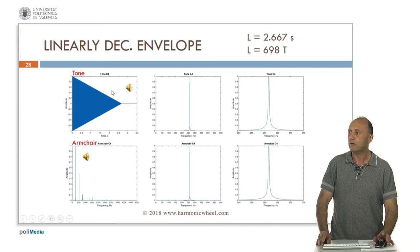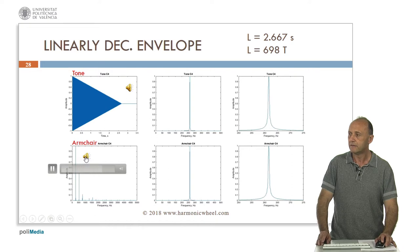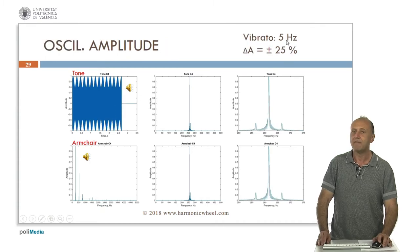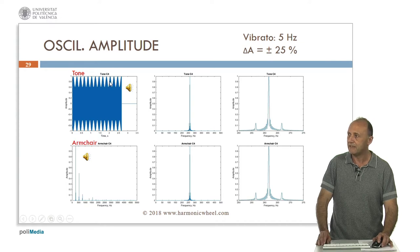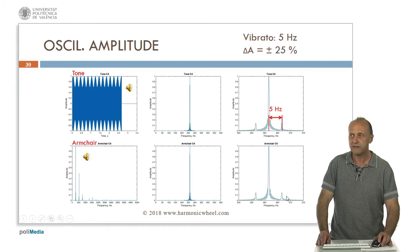Now a linearly decreasing envelope — that is only the decrescendo — as occurs for example with a piano or a guitar. This is the tone. This is the shape of the spectral line, and for the armchair it contains several lines, each equal to the one in the tone. Now let's consider an oscillating amplitude, that is a vibrato of 5 Hertz, with a variation in amplitude of plus or minus 25%. This is the result for the tone. Now the spectral line contains two small lines 5 Hertz apart, because the vibrato was 5 Hertz. And in the case of the armchair, again we have several lines, each of them containing two small lines as in the case of the tone.